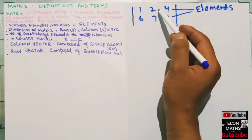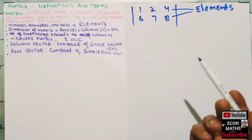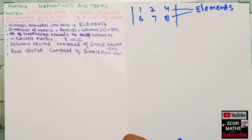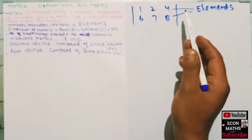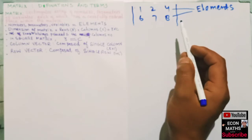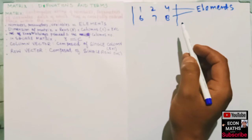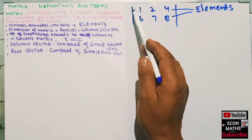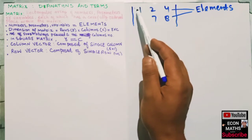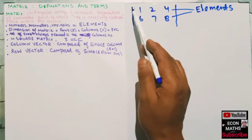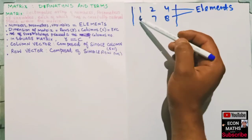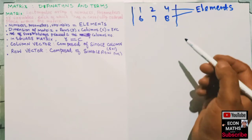Similarly, two, six, seven, and one are also elements of that matrix. Now, what is the dimension of a matrix? The number of rows multiplied by the number of columns gives us the dimension of the matrix. Here the number of rows is two, and the number of columns is three.